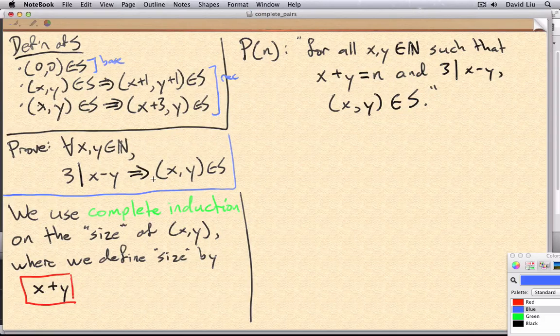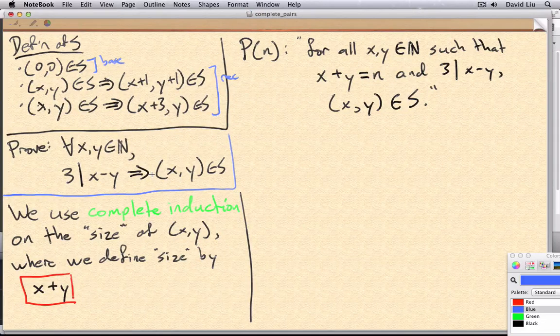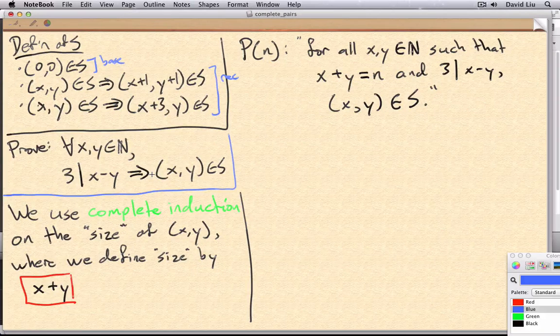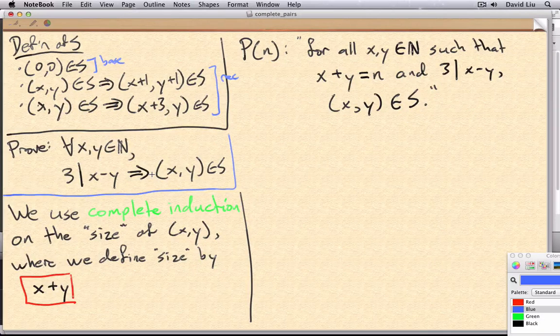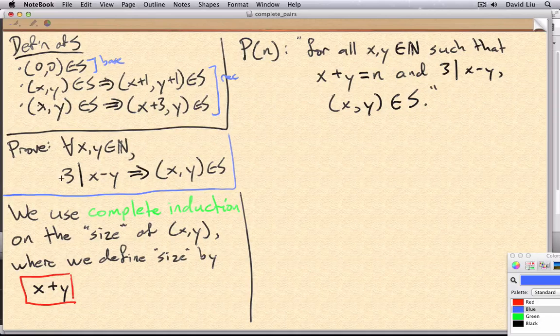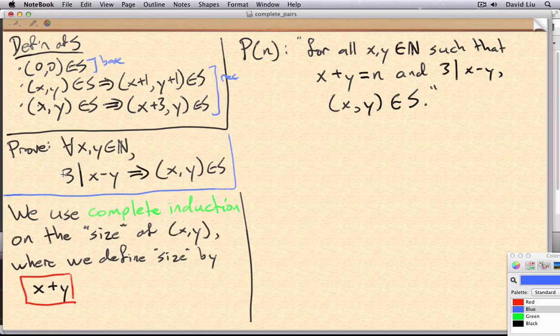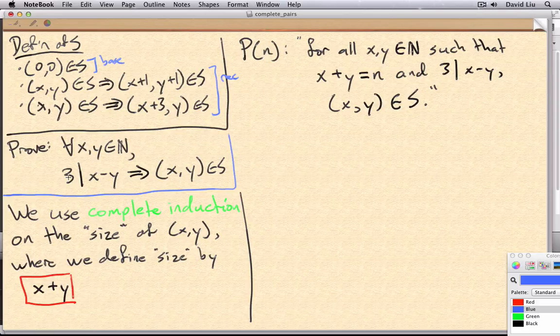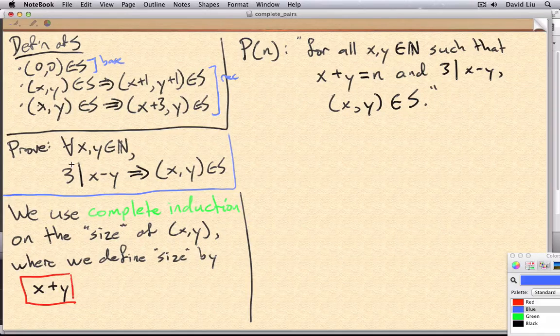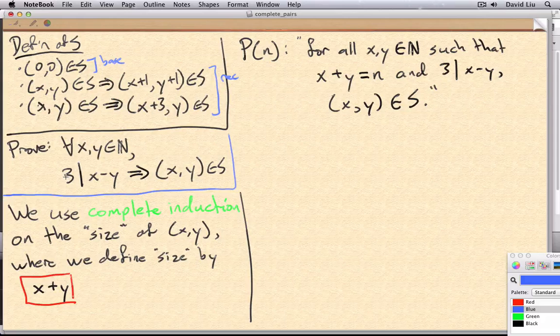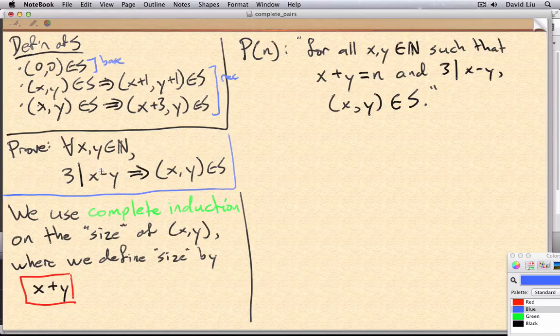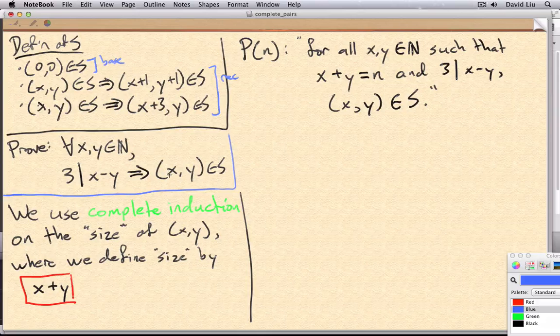An ordered pair x,y is in the set if and only if 3 divides x minus y. Now I said if and only if, and in class we proved if x,y is in S, then 3 divides their difference, 3 divides x minus y. What we'll do in this video is finish the proof of the converse. If we have two natural numbers such that 3 divides their difference x minus y, then the ordered pair x,y is in the set.